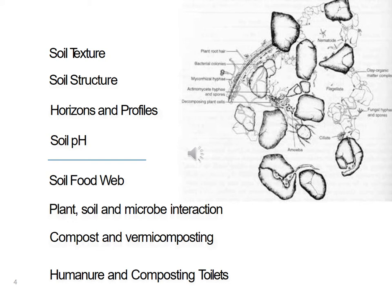Or a loamy texture. A loam has a little bit of sand, silt, and clay in it. The type of texture will be indicative of its ability to support the plant and how it will perform for you in a garden or agricultural setting.